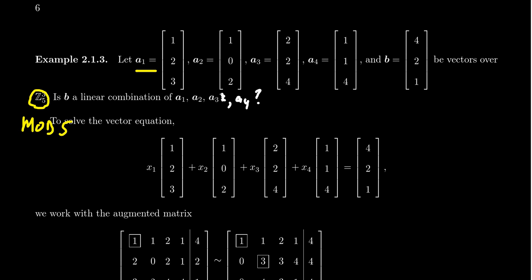Our first vector A1 will be (1, 2, 3), A2 will be (1, 0, 2), A3 will be (2, 2, 4), and A4 will be (1, 1, 4). Can these four vectors be combined in such a way to produce the vector B, which is (4, 2, 1)?